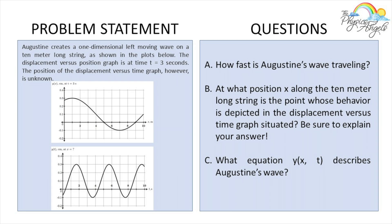So this is the problem we're going to be working with today. Augustine creates a one-dimensional left-moving wave on a 10-meter long string as shown in the plots below. The displacement versus position graph is at a time t equals three seconds. The position of the displacement versus time graph is unknown, and we have a bunch of questions: how fast is Augustine's wave traveling, what position x on the 10-meter long string is the point depicted in the displacement versus time graph, and what is the equation for this wave?